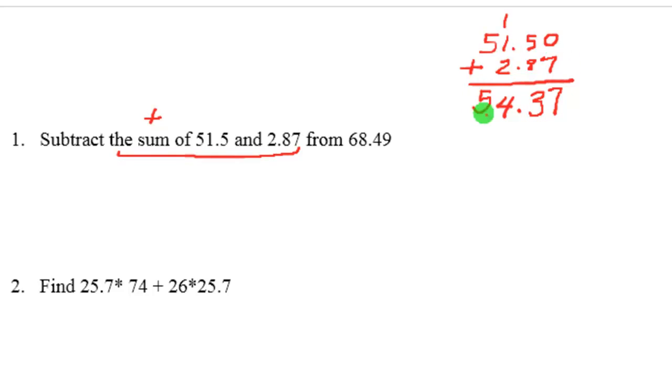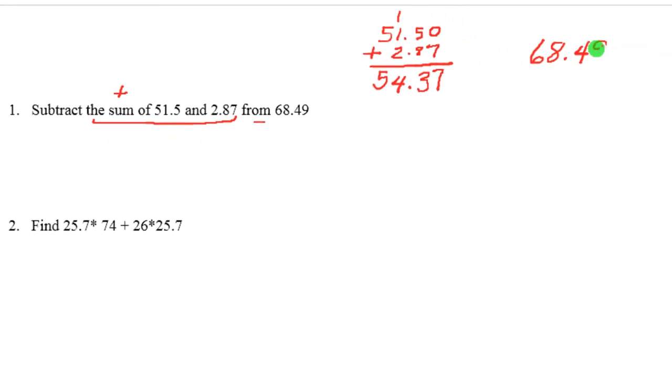We're going to subtract that from 68.49. Subtract from goes in reverse order, which means you're going to put the 68.49 first, and then subtract this sum, 54.37, from 68.49. So it goes in backwards order. Alright, so let's just subtract here.